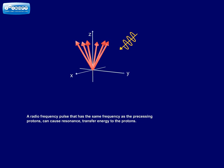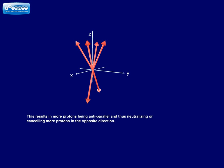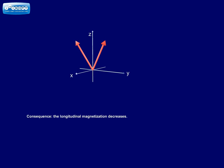A radio frequency pulse that has the same frequency as the precessing protons can cause resonance, transfer energy to the protons. This results in more protons being anti-parallel and thus neutralizing or canceling more protons in the opposite direction. Consequence? The longitudinal magnetization decreases.